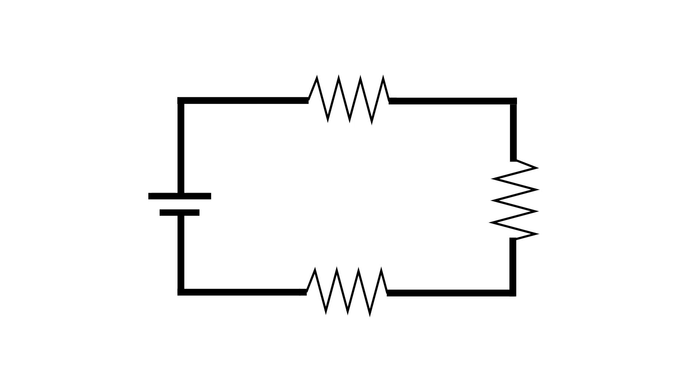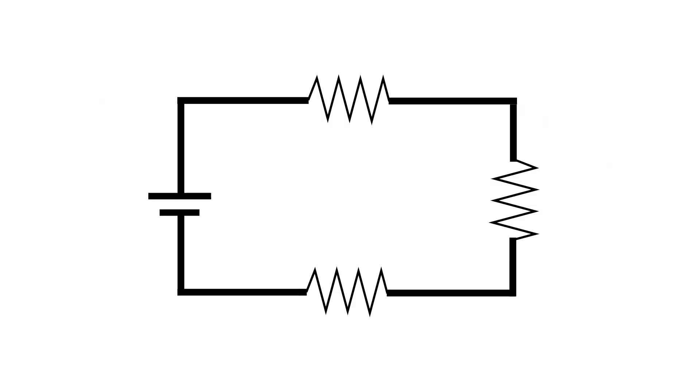In a series circuit, the loads are connected in a row or end to end. We see this in Christmas lights — when you have Christmas light bulbs and one goes out in the old school Christmas lights, they all go out. That's because the electrons have to actually move through each load. They're very simple: all you do is add up the resistances and that is your total circuit resistance.